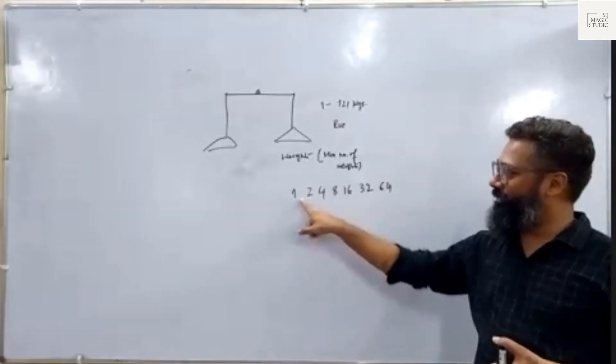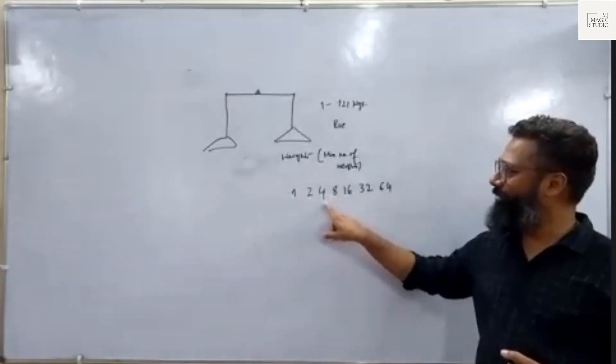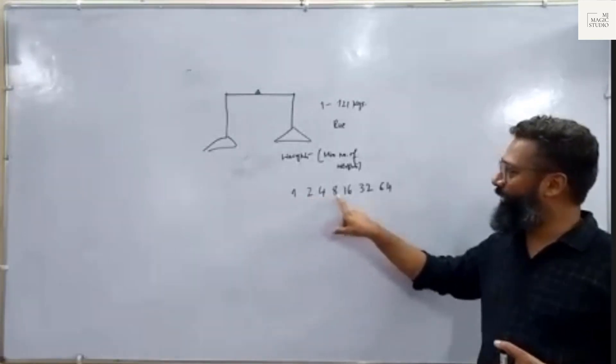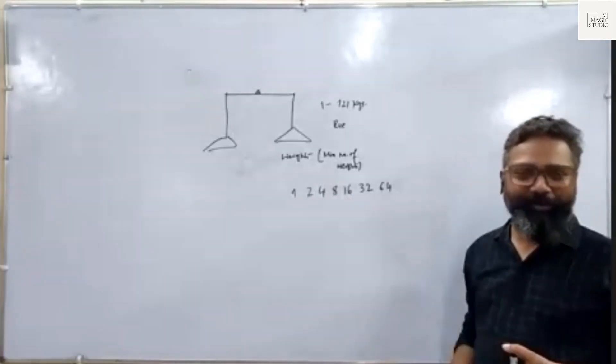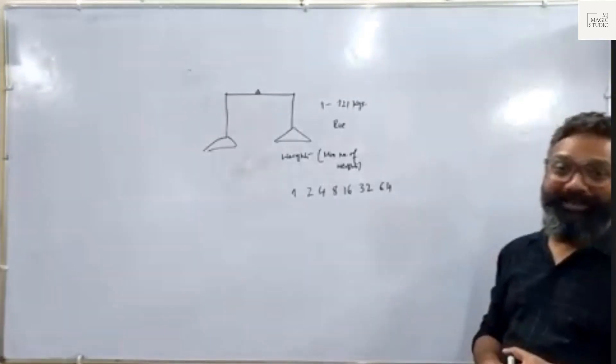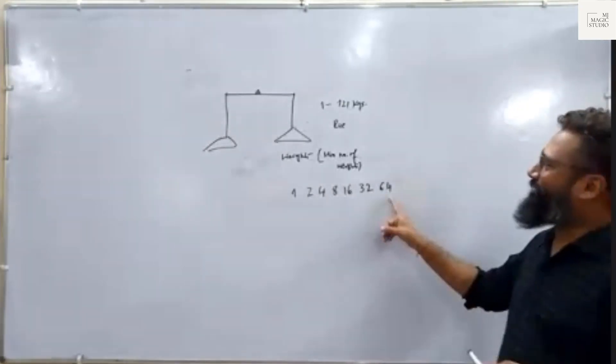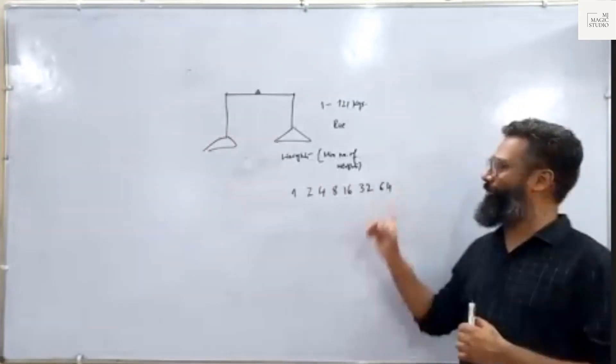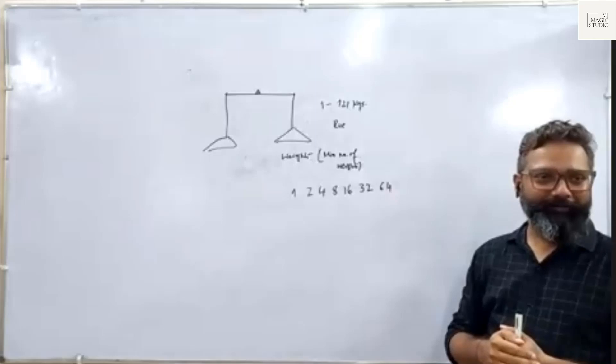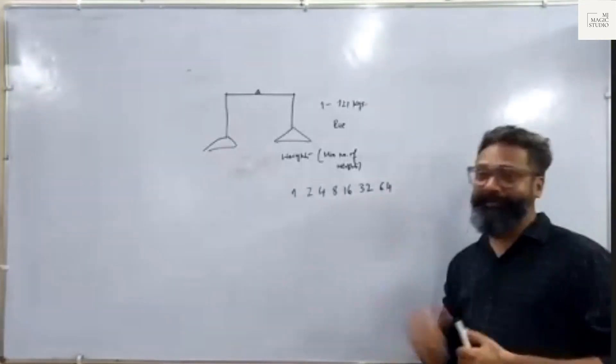1, 2, 3, 4, 5, 6, 7, 8, 9, 10, 11, 12, 13, then 14, then 15, then 16. You will see that you would be able to do till 127. This is the answer. With this you can weigh till 127 because total is 127. 64 into 2 minus 1 is the total. You can do till 127. But my question is, is this the correct answer?